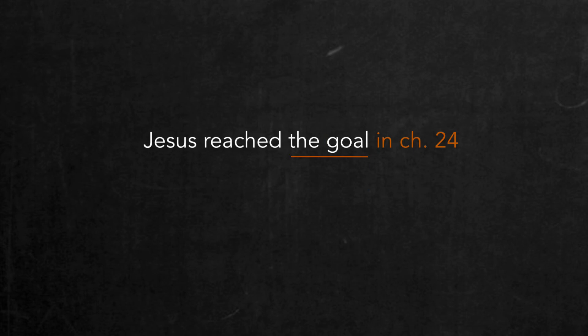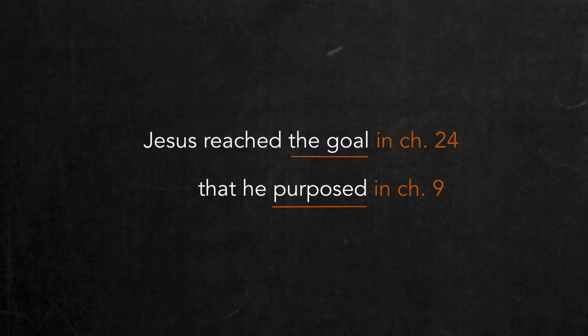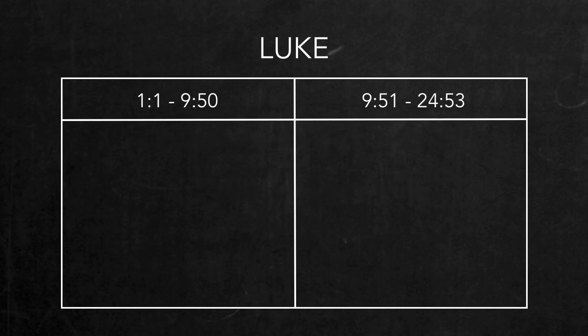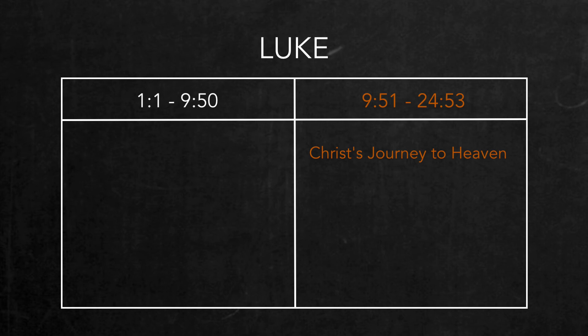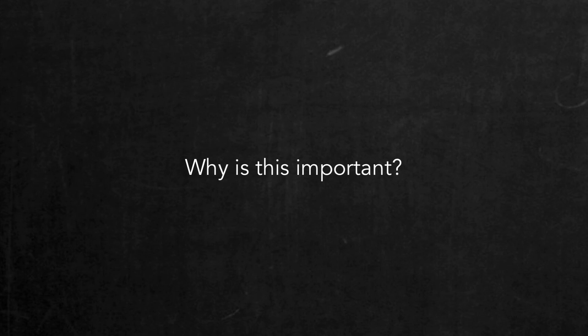That is, Jesus reached the goal at the end of the gospel which he set out to accomplish starting way back in chapter 9, the turning point in the gospel. So Luke has divided his gospel into two halves, and it is clear that the second half is framed by Christ's journey to heaven. The various parts within the second half all relate to that journey, which means ultimately that the story of Zacchaeus, which is found in chapter 19, is also related to that heavenly journey. We will be discussing why this is important in future videos.